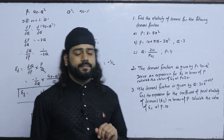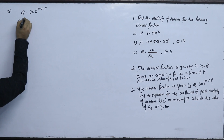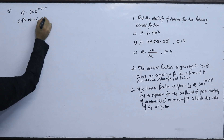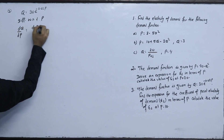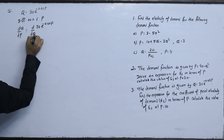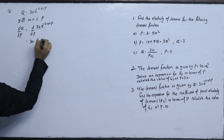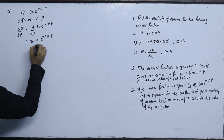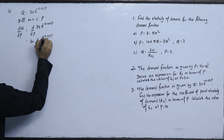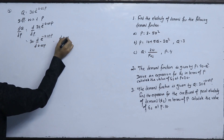Now we have to do number 3. The demand function is q equals to 30e to the power minus 0.02p. Differentiating with respect to p: dq/dp equals d(30e to the power minus 0.02p)/dp. The constant 30 stays, and differentiating e to the power minus 0.02p gives minus 0.02 into e to the power minus 0.02p.